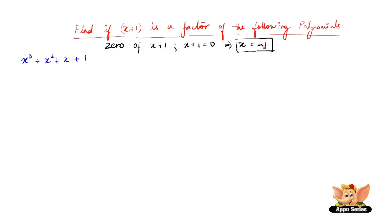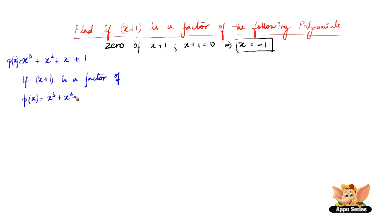Now, if x plus 1 is a factor of p of x equals x cubed plus x squared plus x plus 1, then p of minus 1 — that is, p of the zero of x plus 1 — should be equal to 0.